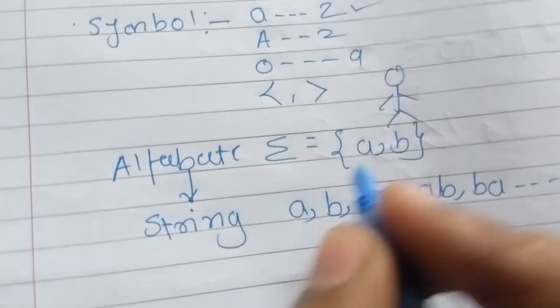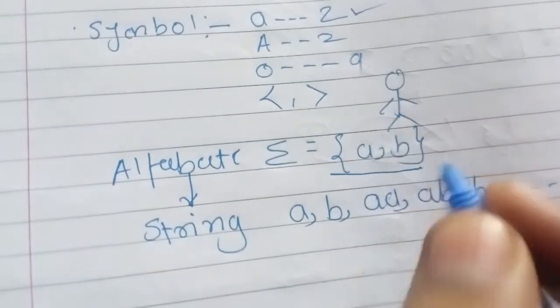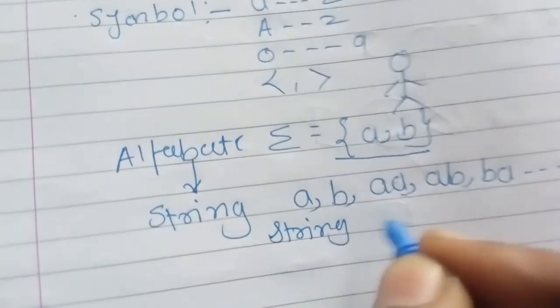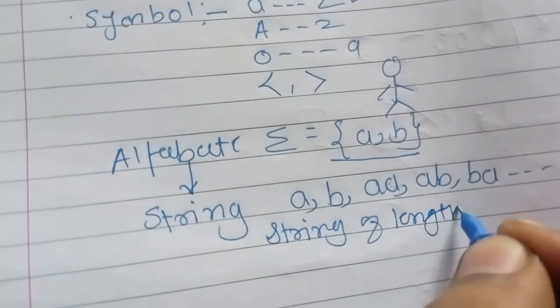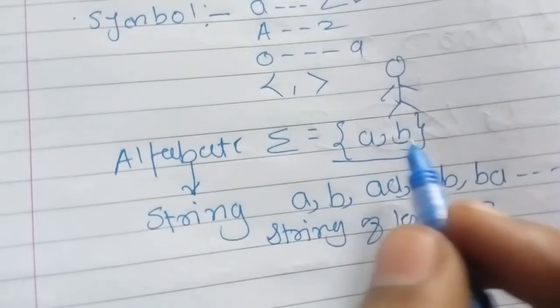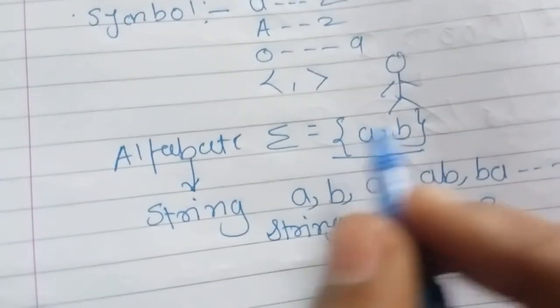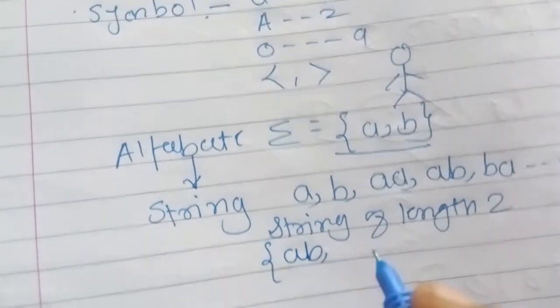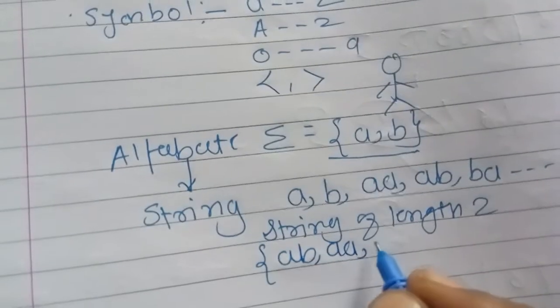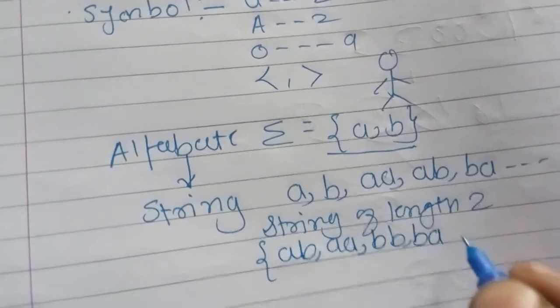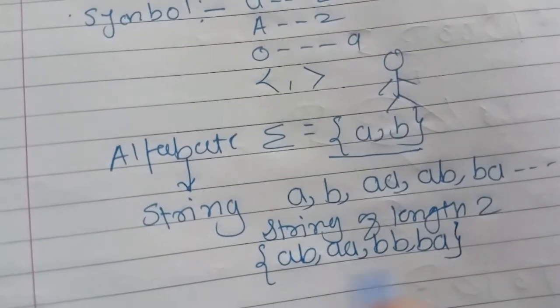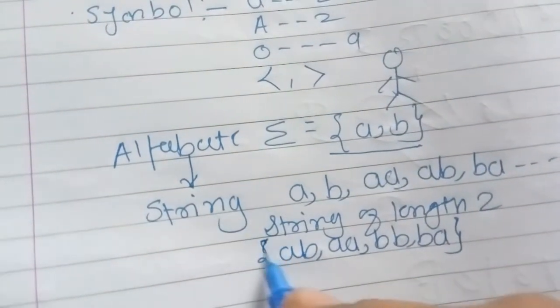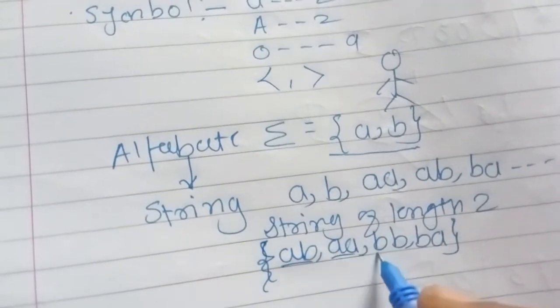Let's take one example. If we have the alphabet {a, b} and we need a string of length two, how many strings can we create? You can have ab, aa, bb, and ba. So these four strings you can make from this alphabet of length two.